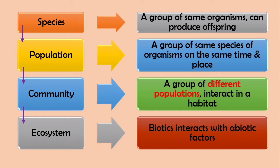What is species? Species is a group of same organisms that can produce offspring. For example, your mom and your dad. Your mom and your dad from the same species, human, homo sapiens species, and can produce offspring.